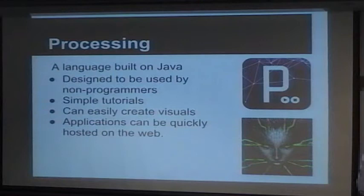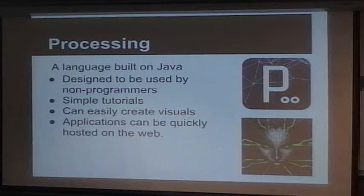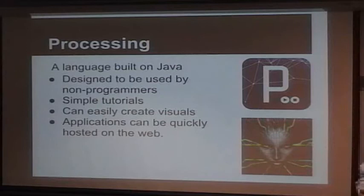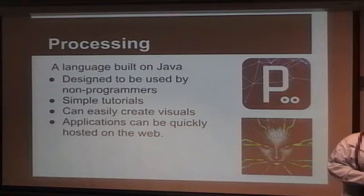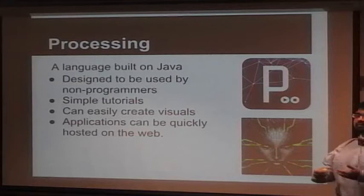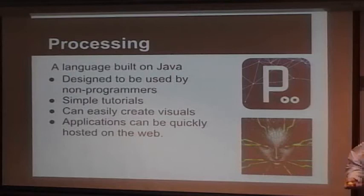This is Shodan from System Shock — an AI character. Processing is a language I started using in some of my classes. It's built on Java and was designed to be used by non-programmers, with very simple tutorials that let you create a visualization really quickly. By typing in a few parameters, you get a visualization to pop up. Since it's built on Java, when you compile it, it creates a Java applet that can be simply inserted into any web page. This enables you to quickly incorporate some sort of interaction even in a class full of non-programmers.